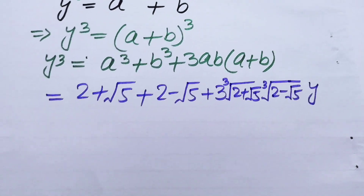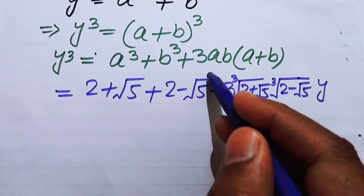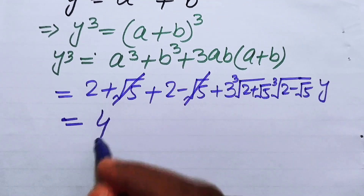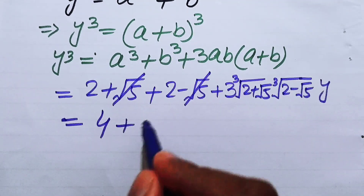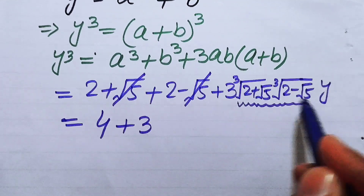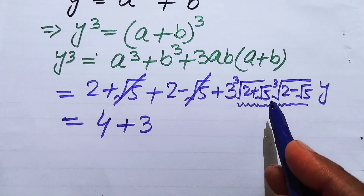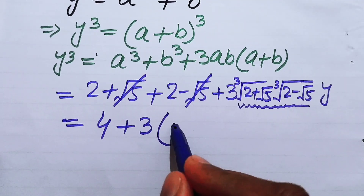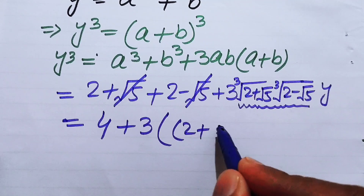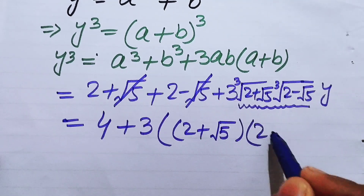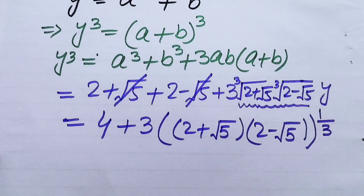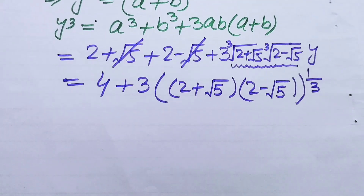We make simplifications: the positive square root of 5 and negative square root of 5 cancel each other, and adding the like terms gives 2 plus 2 equals 4. For the 3ab factor, we combine the cube roots of the two terms, writing it as the cube root of (2 plus square root of 5) times (2 minus square root of 5).